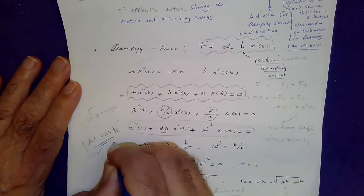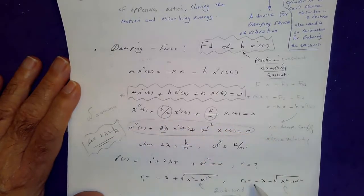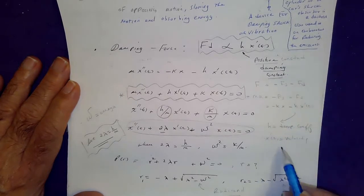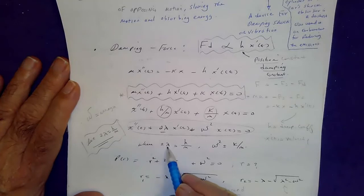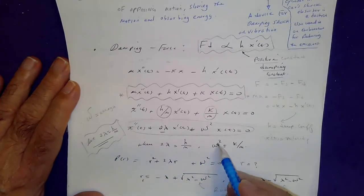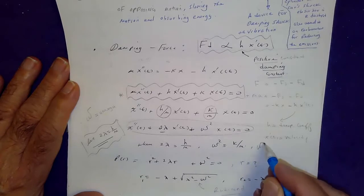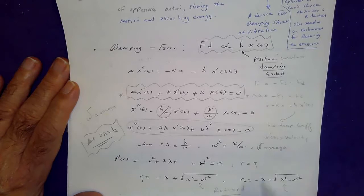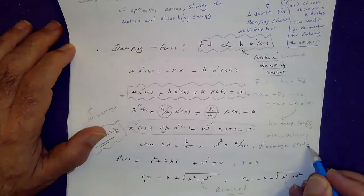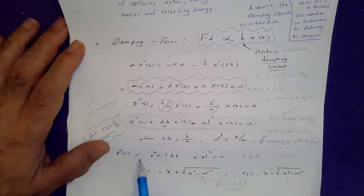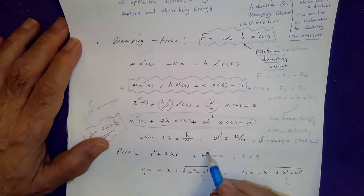We make the substitution: let h/m equal 2λ for simplicity, where h is the damping coefficient and x prime of t is velocity, x double prime is acceleration. Also, ω² equals k/m from the previous video, where ω is the angular velocity (radians per second). The auxiliary polynomial becomes r² + 2rλ + ω² = 0, giving two roots. The radicand (discriminant) is λ² minus ω².